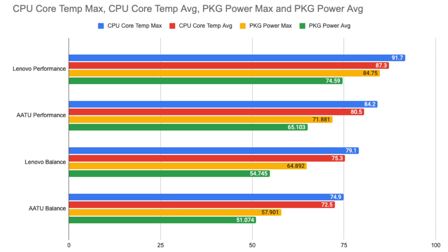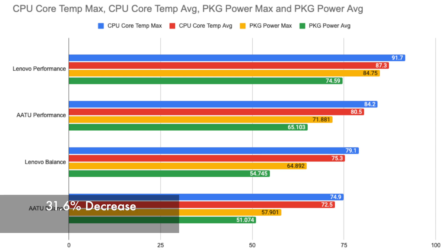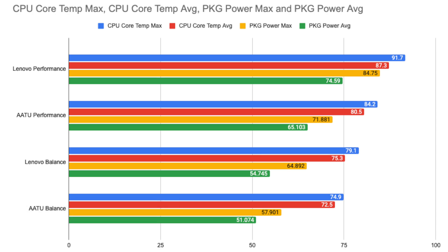Next is package power max. The Lenovo in Performance mode draws the most watts at 84.7. Even lower is AATU in Performance mode at 71.8. Dropping over 6 points is the Lenovo in Balance mode at 64.8. Having the lowest max power is AATU in Balance mode at 57.9 watts — a 31.6% decrease, which is pretty significant. For package average power, Lenovo Performance mode is pulling 74.5 watts, AATU Performance is pulling 65.1, Lenovo Balance lowers to 54.7, and AATU Balance has 51 watts. This results in a 31.5% decrease, almost spot on with the package power max.